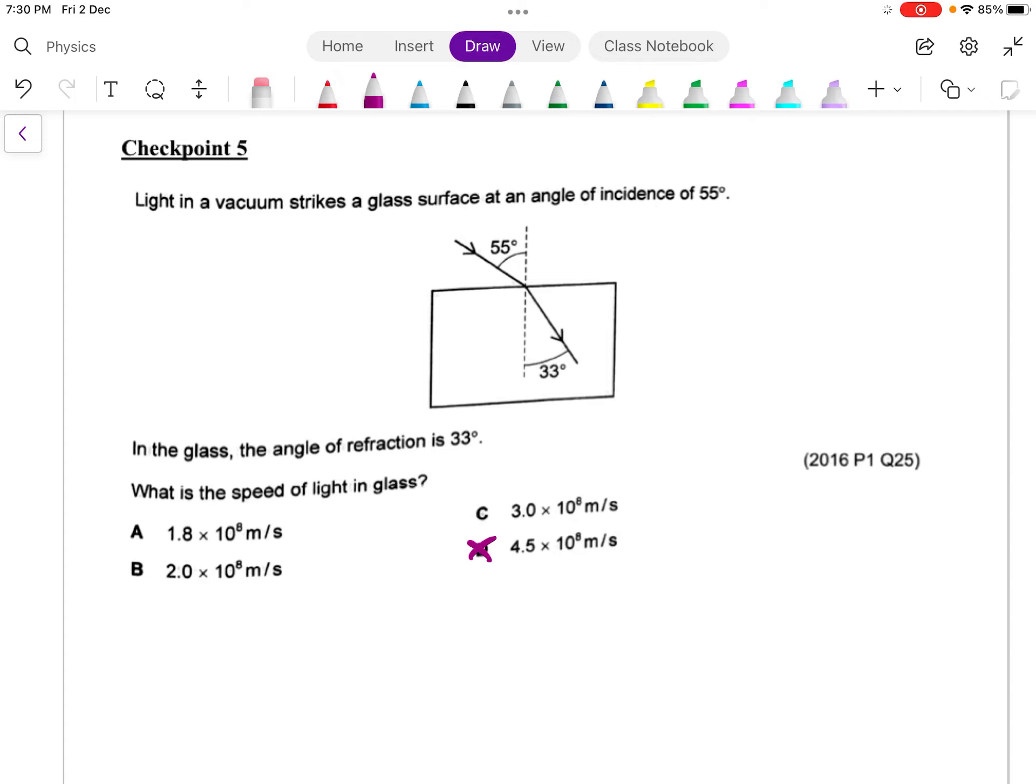Next is part C. Option C also you can eliminate because definitely in glass, the speed of light shouldn't be 3 times 10 to the 8 meters per second. After that, let's do a bit of calculation.